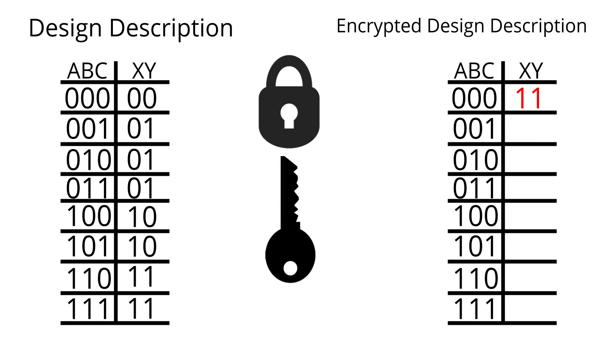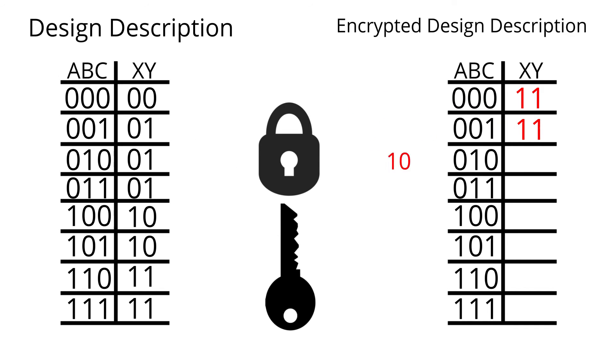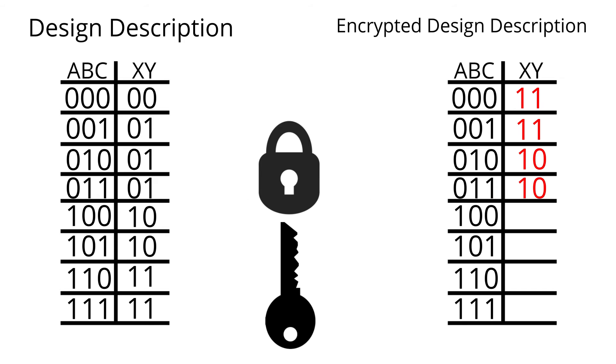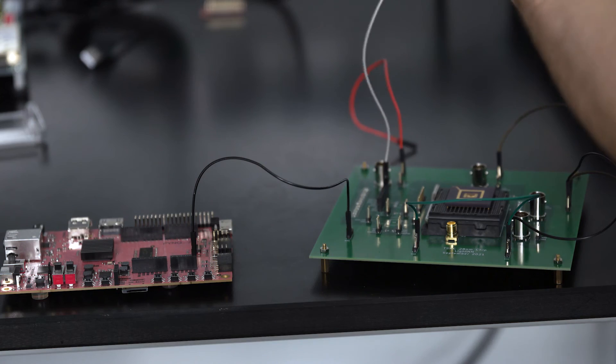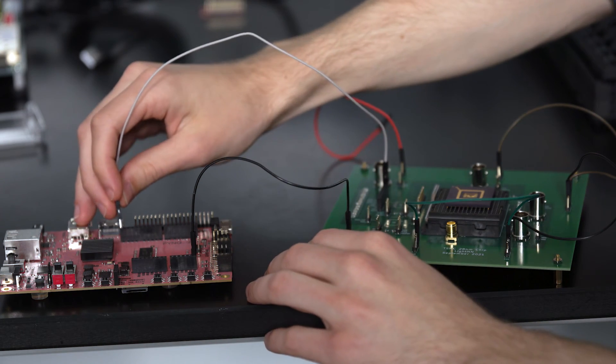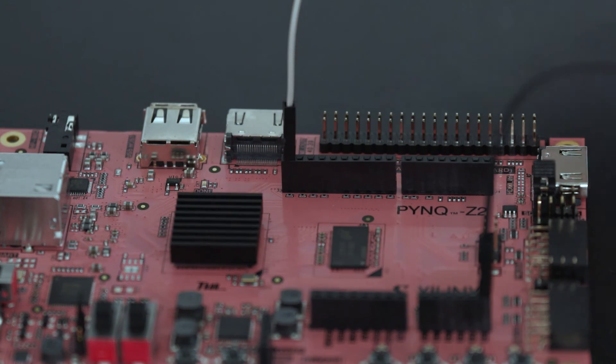We can encrypt hardware circuits just like we encrypt messages, because of that low-level ones and zeros description. The impact of crypto logic in the long term means that companies like Apple and Broadcom, and even the DoD and other government agencies, can fabricate chips with third parties and not worry about intellectual property being at risk. We are encrypting hardware — software has been encrypted for years, but this is the first-ever approach to actually encrypt hardware with the same guarantees that we have with everyday ciphers.